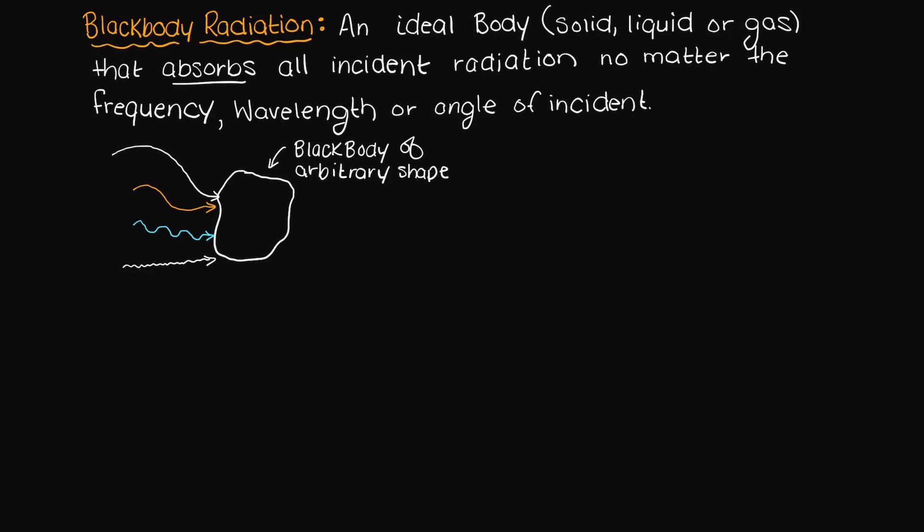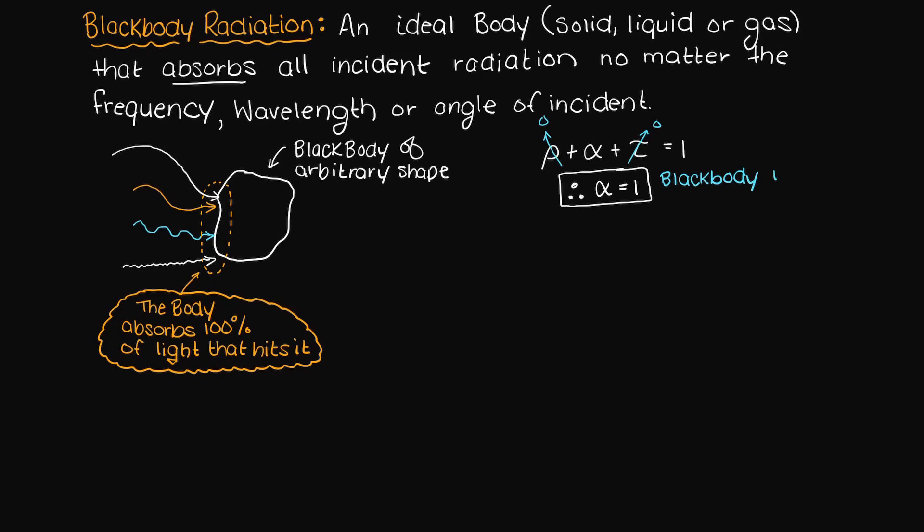So no matter what radiation hits it, or at what angle the radiation hits the body, the body will fully absorb all of that light. Therefore, it has no reflectivity and no transmission, absorption is simply equal to one.